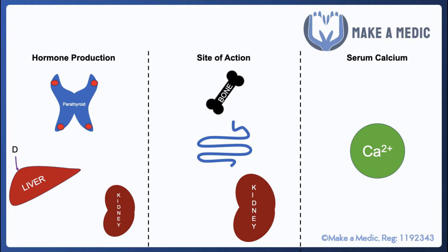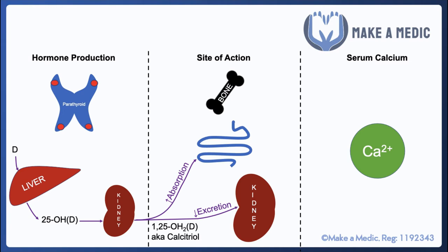Vitamin D also has a role in regulating calcium concentration. The precursor for vitamin D can either come from the diet in the form of ergo- or chole-calciferol, or it can be generated from 7-dehydrocholesterol by UV light acting through our skin. Vitamin D requires several activation steps before it becomes the active form known as calcitriol. First, it goes to the liver where it undergoes 25-hydroxylation to become 25-hydroxyvitamin D. Then that product goes to the kidneys where it undergoes 1-alpha hydroxylation to become 1,25-dihydroxyvitamin D — calcitriol — the active form of vitamin D.